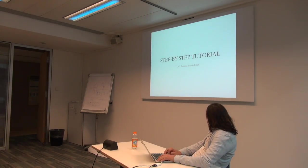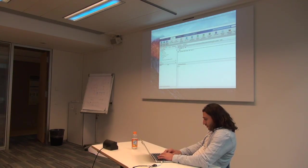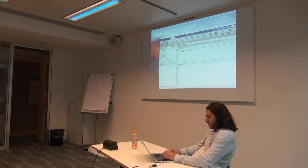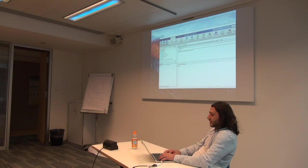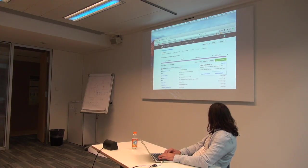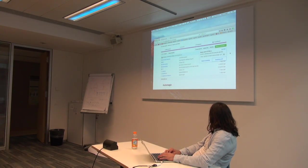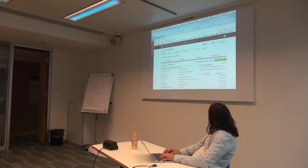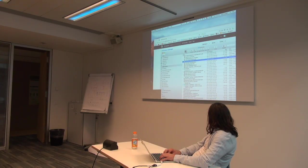Now let's do some practical work. First, we download the toolbox by searching for Automagic, which leads to our webpage with a GitHub link. You can download the entire package there, and there's also a manual describing the entire toolbox. Once downloaded, navigate to the Automagic folder and run the install file — this installs the GUI app.